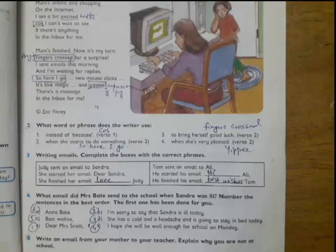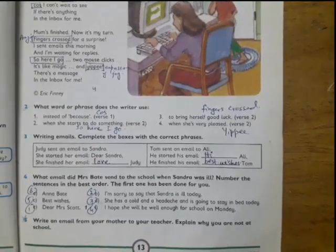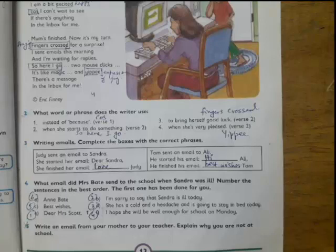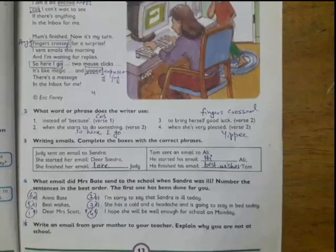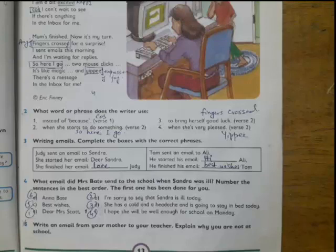Move to next one. Write: well, what email did Mrs. Bat send to school when Sandra was ill? Number the sentences in the best order. The first one has been done for you. So here the sentences are given and we have to number them. We have to give them an order so it will be a proper email.